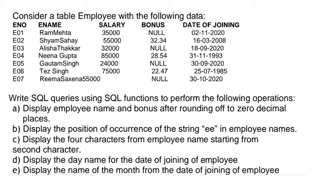Now we'll go to the next set of questions. We have been given one employee table with 5 columns. These questions are also on the basis of scalar functions. The first sub-question says: display employee name and bonus after rounding off to zero decimal places.